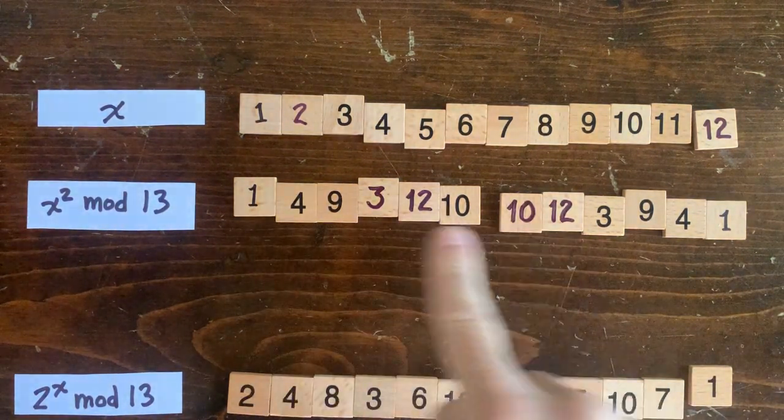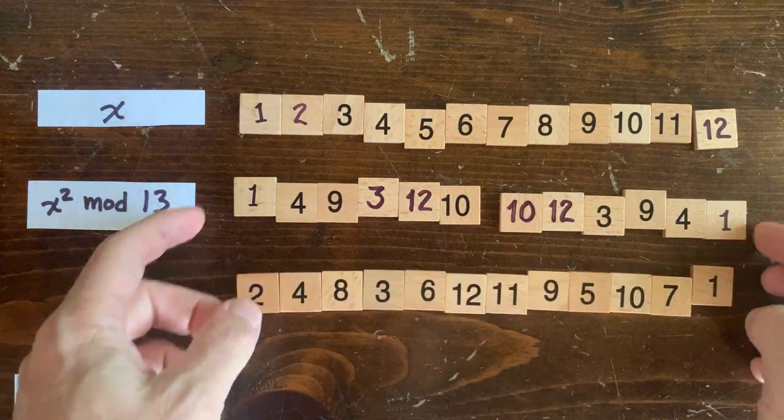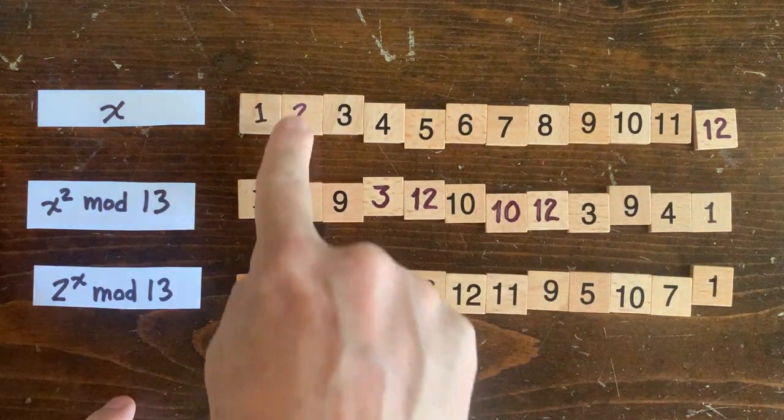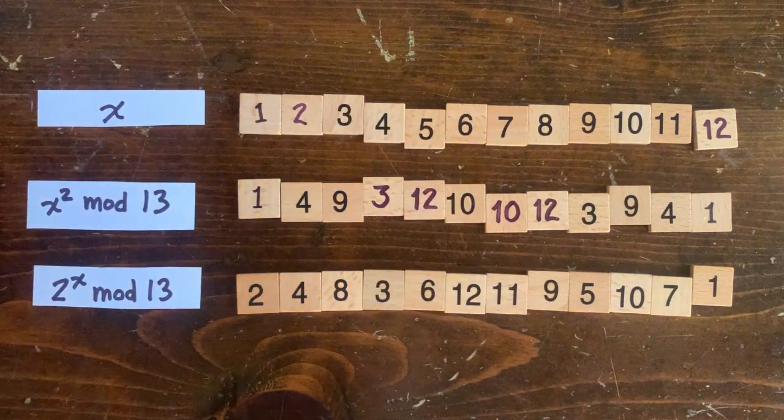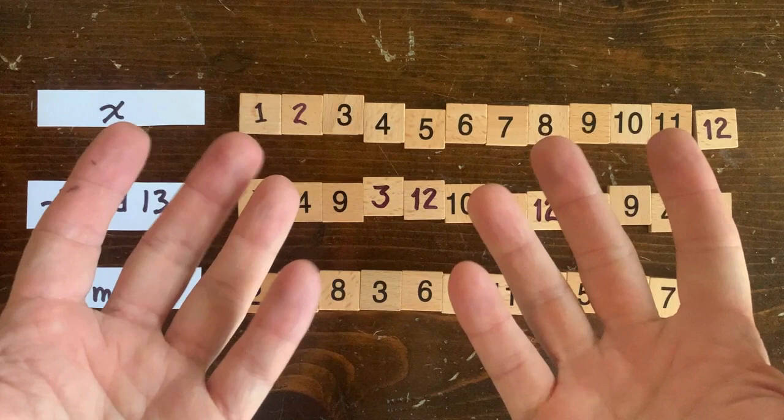So there are six distinct remainders here, and we can call them squares mod 13. So 4 is a square of 2, and 10 is a square of 6, and so on. So how do we know which six numbers are lucky enough to be squares?